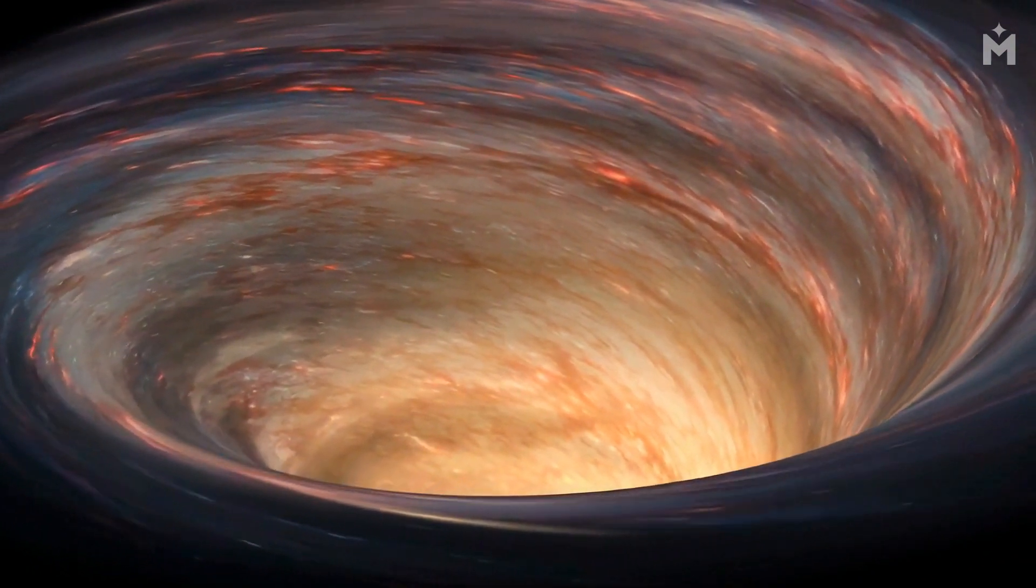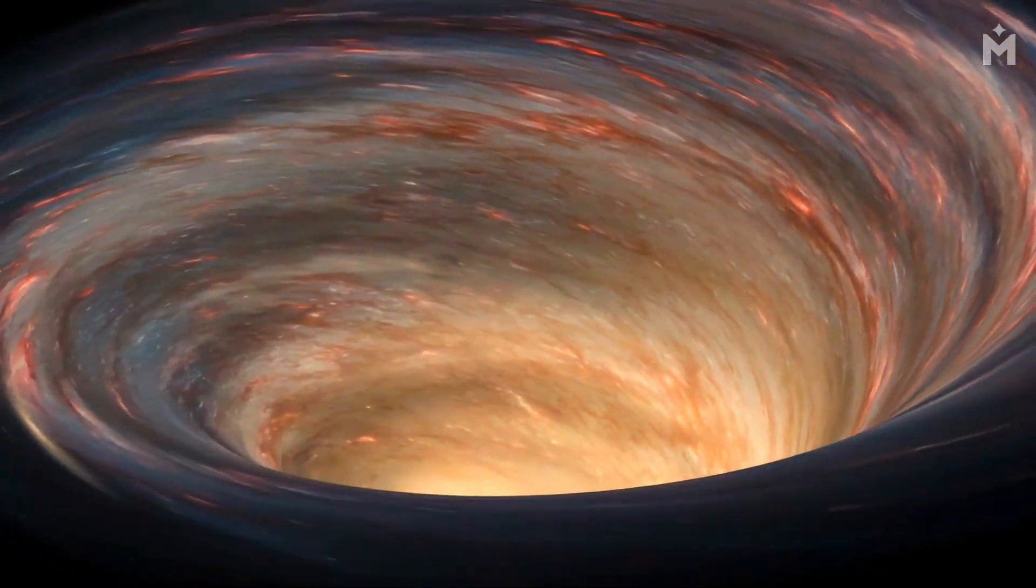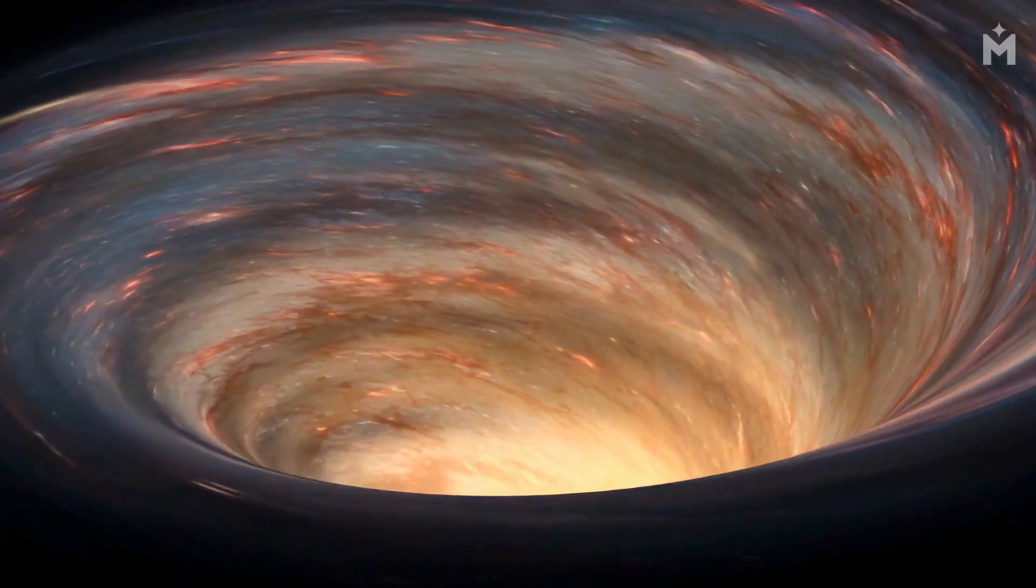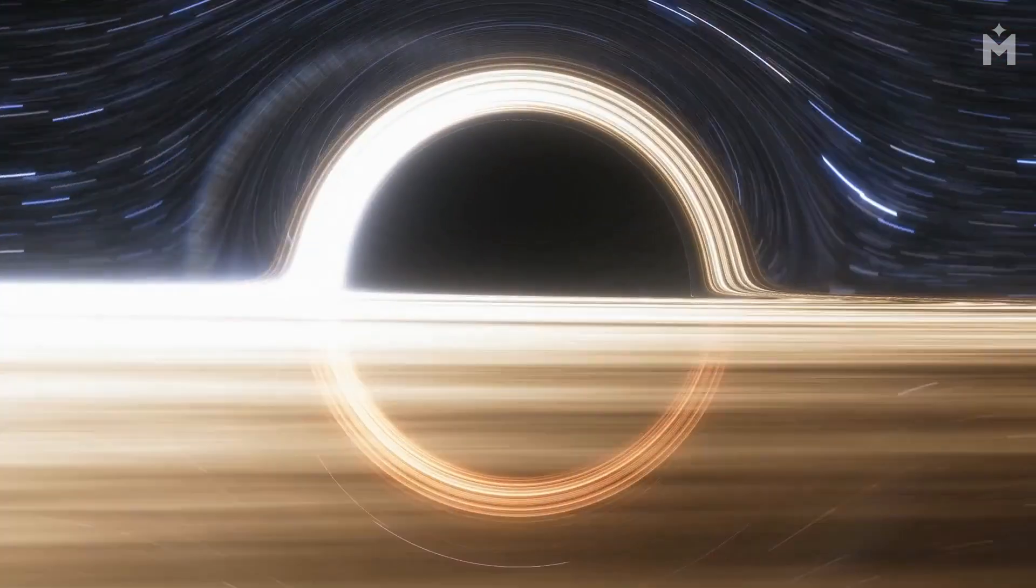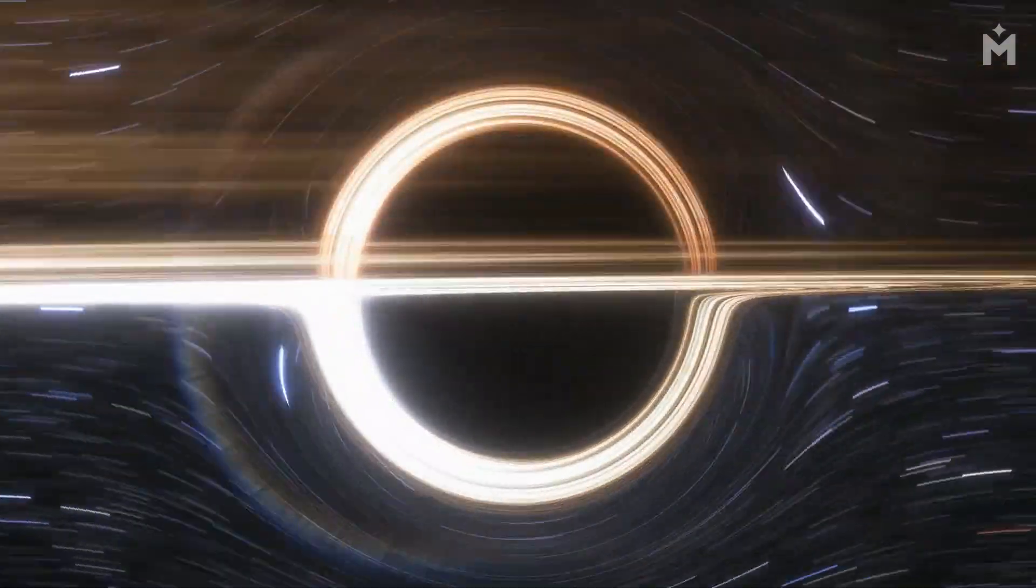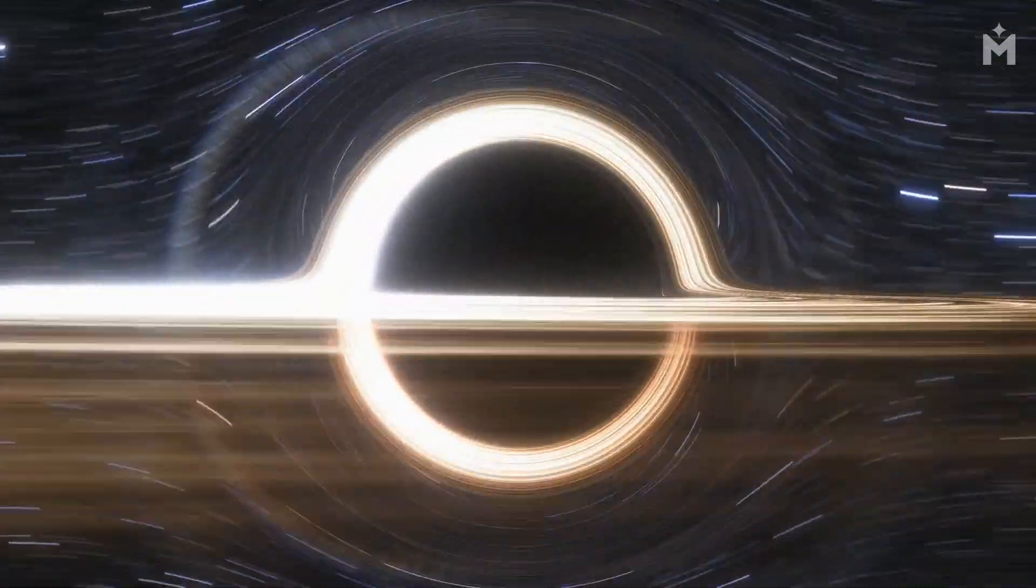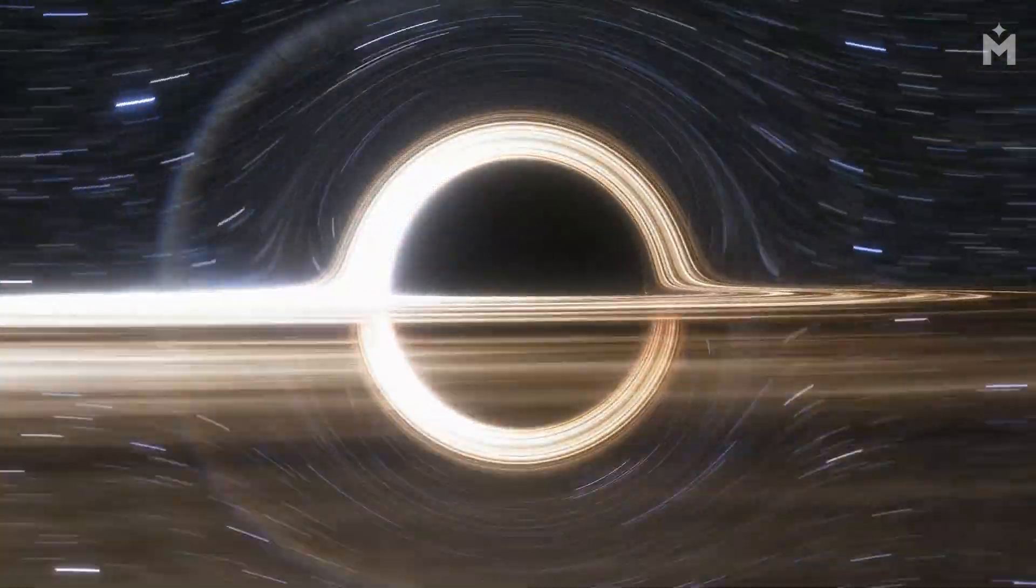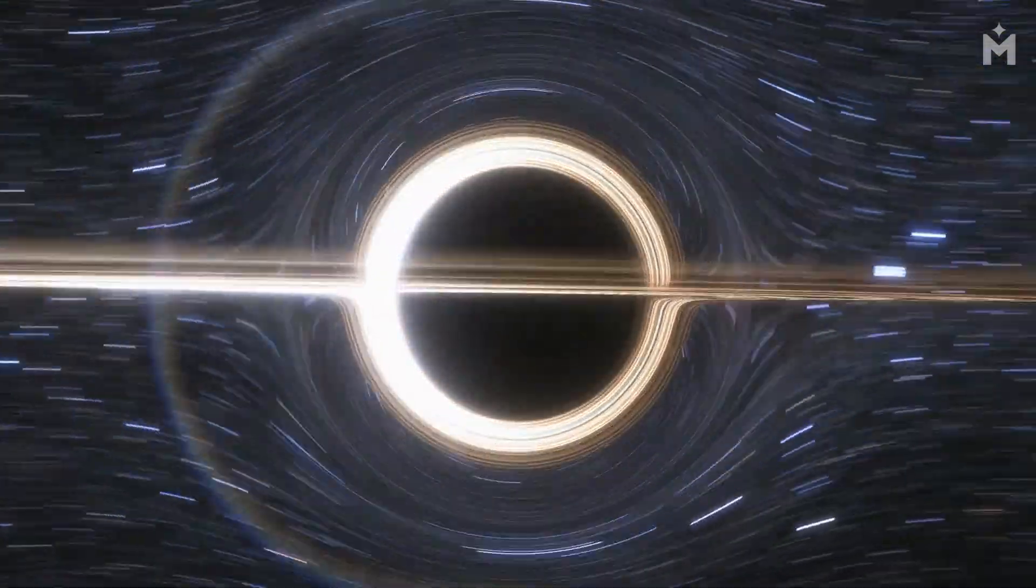Anything that gets too close to a black hole will be pulled in by its gravity. This includes things like light and particles of matter. As more and more matter is pulled into the black hole, it starts to form an accretion disk around the black hole. This disk is made up of gas and dust that is swirling around the black hole at high speeds.